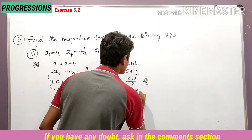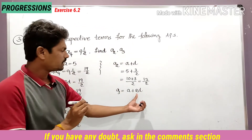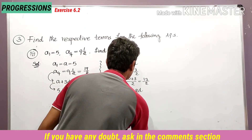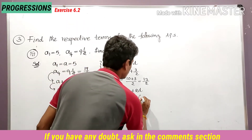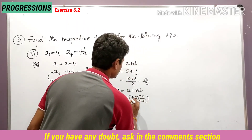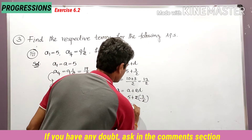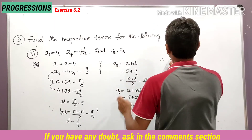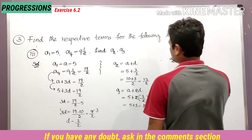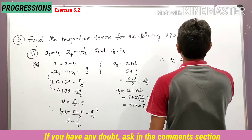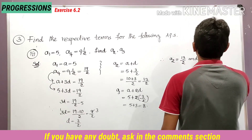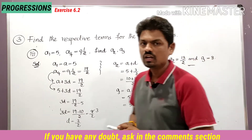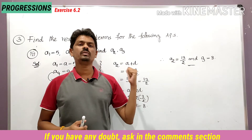a3 is equal to a plus 2d. Substituting a equal to 5 and d equal to 3 by 2: 2 and 2 get cancelled, so 5 plus 3 is 8. Therefore a3 is equal to 8. So a2 is equal to 13 divided by 2 and a3 is equal to 8. That completes the third bit.